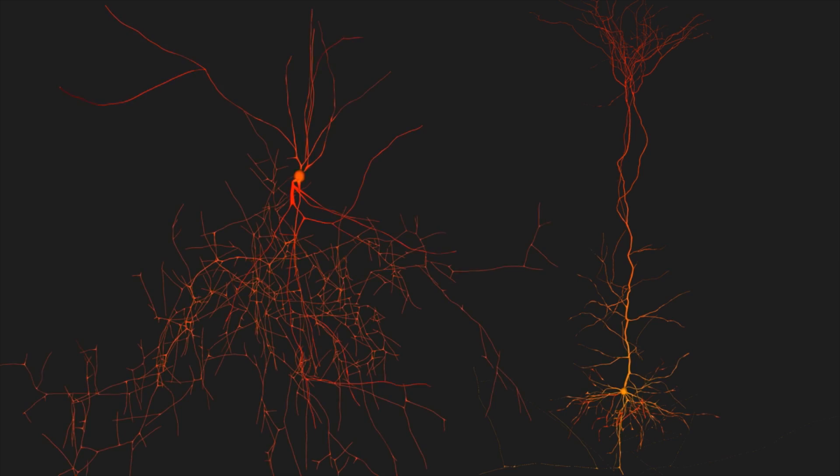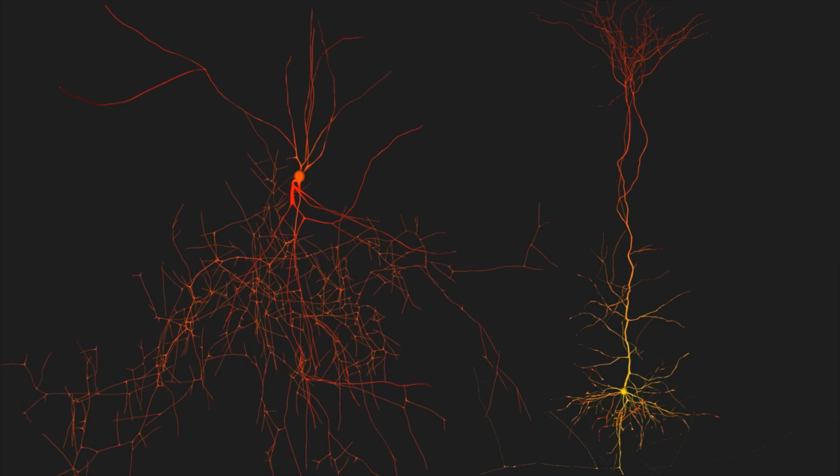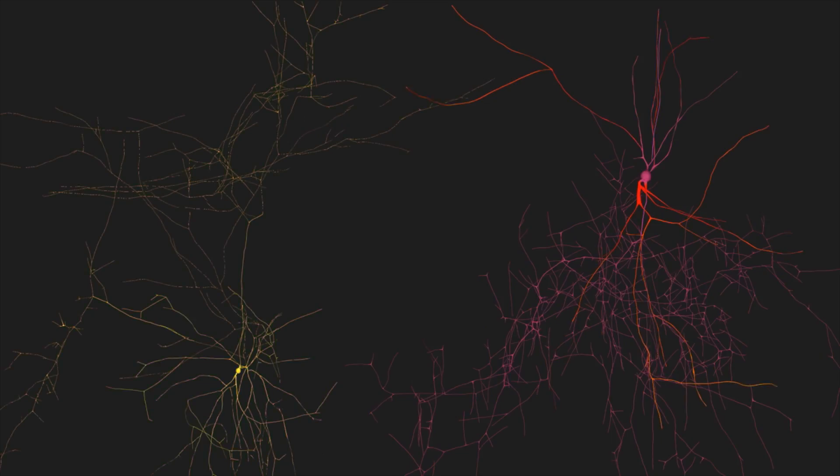For example, we know that there are cell types, but we don't know how many cell types. And one process of understanding through our project was to characterize objectively 11 cell types, electrical cell types. Each one has its own firing pattern. This is a step in understanding.